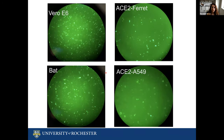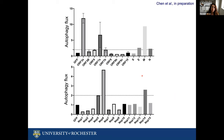For these experiments, we engineered a set of cell lines that express an autophagy marker, LC3, fused with GFP, so we can monitor autophagosome formation and autophagy flux. The cell lines that we engineered are the Vero E6 cells, which are a prototype cell line for coronavirus research, ACE2-expressing ferret lung cells, bat lung cells, and ACE2-expressing human lung cells, in particular the A549 cells. In addition, we also acquired a library of the different open reading frames encoded in the SARS coronavirus genome, so we could assess how individual expression of these genes affects autophagosome formation and autophagy flux.